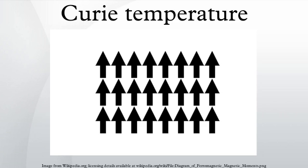Curie point, also called Curie temperature, is the temperature at which certain magnetic materials undergo a sharp change in their magnetic properties. In the case of rocks and minerals, remanent magnetism appears below the Curie point, around 570 degrees Celsius for the common magnetic mineral magnetite.